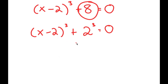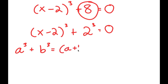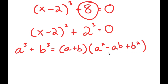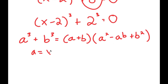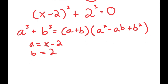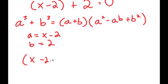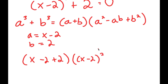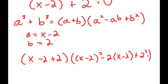So I have (x minus 2) to the power of 3 plus 2 to the power of 3 equals 0. The reason I did that is because if I have something in the form a³ plus b³, this is equal to (a + b)(a² - ab + b²). So in this case, a is equal to x minus 2 and b is equal to 2. So I get (x minus 2 + 2) times ((x minus 2)² minus 2(x minus 2) plus 2²) equals 0.